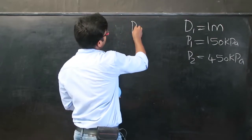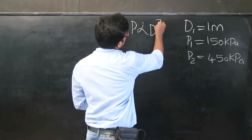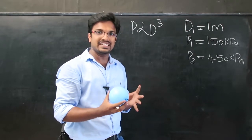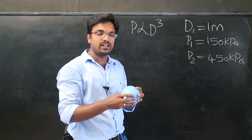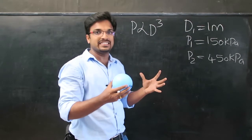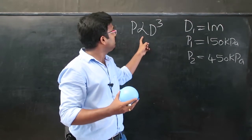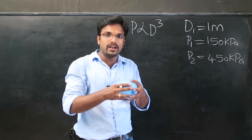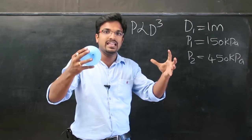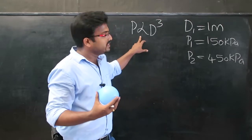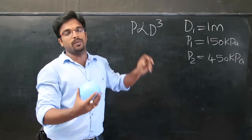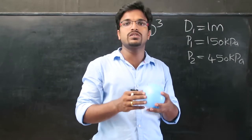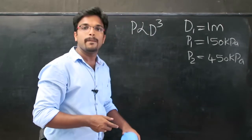It is also given that pressure is directly proportional to D cube — that is, as heating occurs, the gas expands, pressure inside the balloon increases, and the diameter increases following this proportionality law. We are asked to find the expansion work involved in this process.